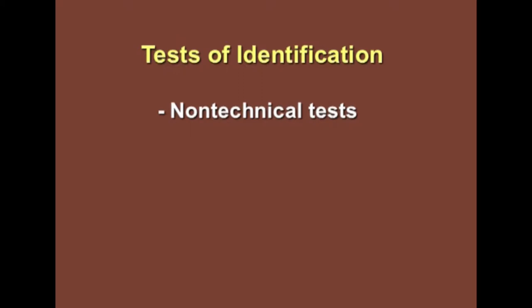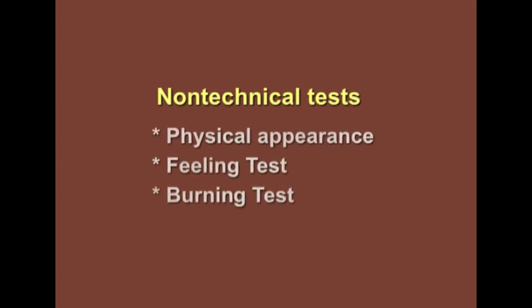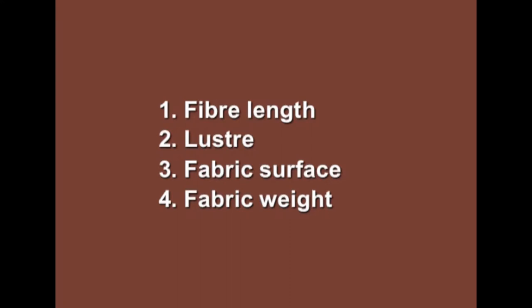In the absence of special equipment and facilities for identification of fiber content in a fabric, one can rely on non-technical tests such as appearance, feeling test, and burning test. These tests have limitations of their own but are helpful to identify the fiber group. The first test is the physical appearance test. The physical appearance of a fabric sometimes indicates the probable fiber content. The yarns are drawn from the fabric separately, warp-wise and weft-wise. Parameters checked are fiber length, lustre, fabric surface, and fabric weight. The fibers are either staple or filamentous; generally all natural fibers are staple except silk.